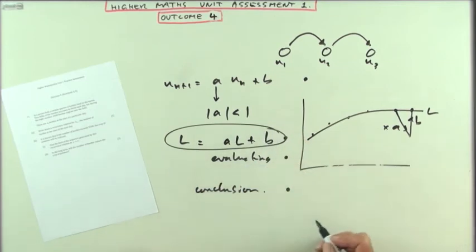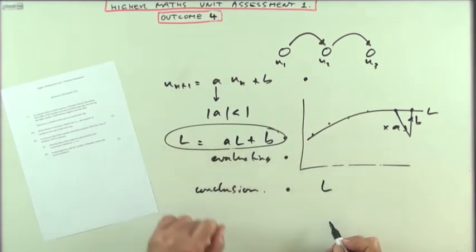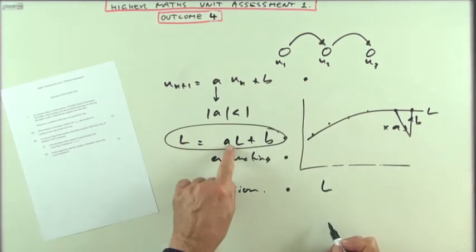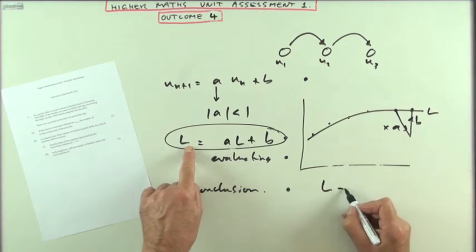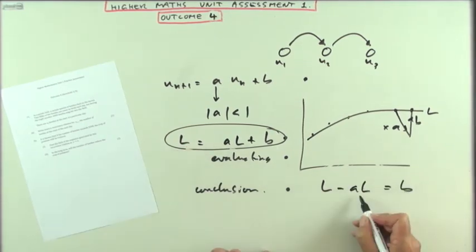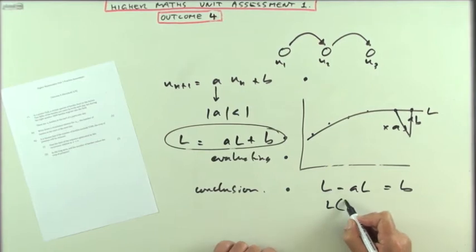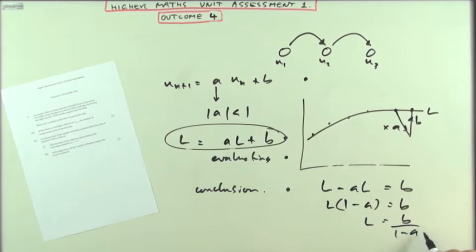An alternative to that would be to write down the limit formula, which is just a rearrangement of that. Take that al across, factorise out the l, so there's one there, minus a, and then take that across and divide, and you've got that limit formula you can use instead. Again, with numbers put in for the first mark, and then evaluated for the second mark, and then the conclusion.